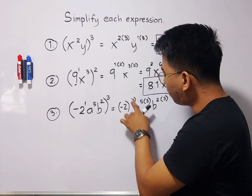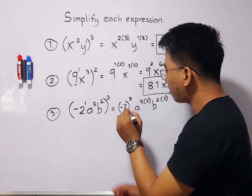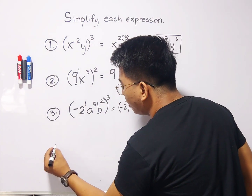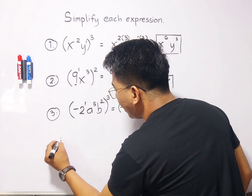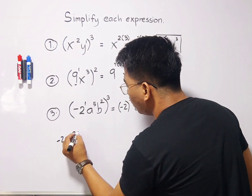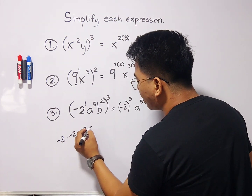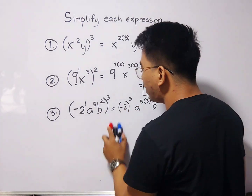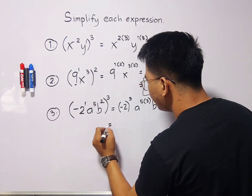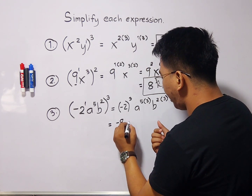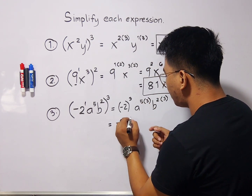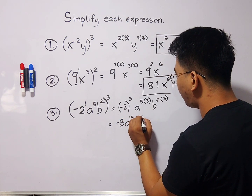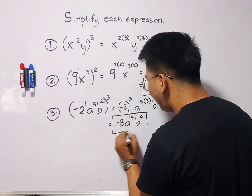1 times 3 is positive 3, so negative 2 raised to 3. Expanding: negative 2 times negative 2 times negative 2 equals negative 8. So the coefficient simplifies to negative 8. For a: a raised to 5 times 3 equals a¹⁵. For b: b raised to 2 times 3 equals b⁶. The answer for number 3 is −8a¹⁵b⁶.